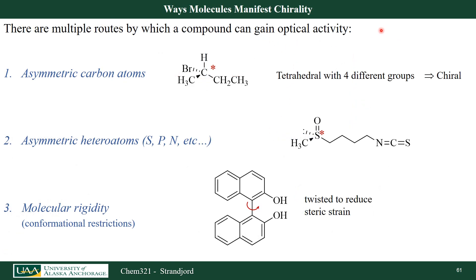There are other ways besides having a chiral carbon that a molecule could be optically active. The most common is an asymmetric carbon — a tetrahedral structure with four different groups. But you could also have heteroatoms such as sulfur, phosphorus, or nitrogen with four different groups attached. You could also have a rigid molecule that can't twist about single bonds — giving two non-superimposable mirror image conformations and therefore a chiral molecule without a chiral carbon.